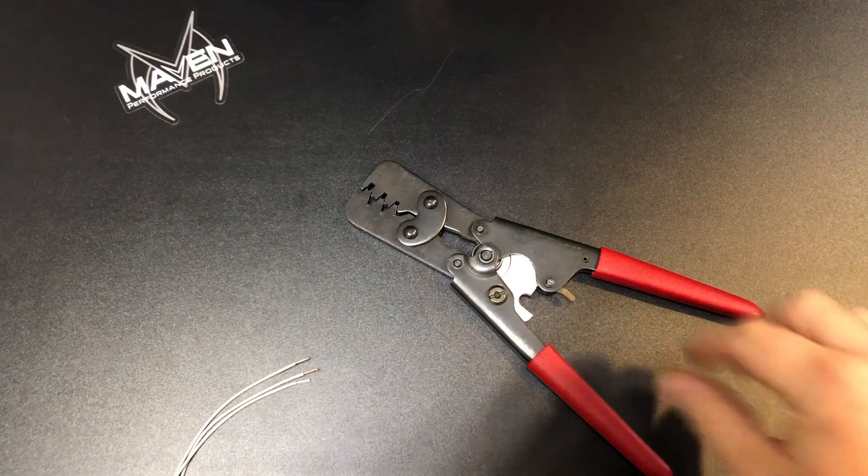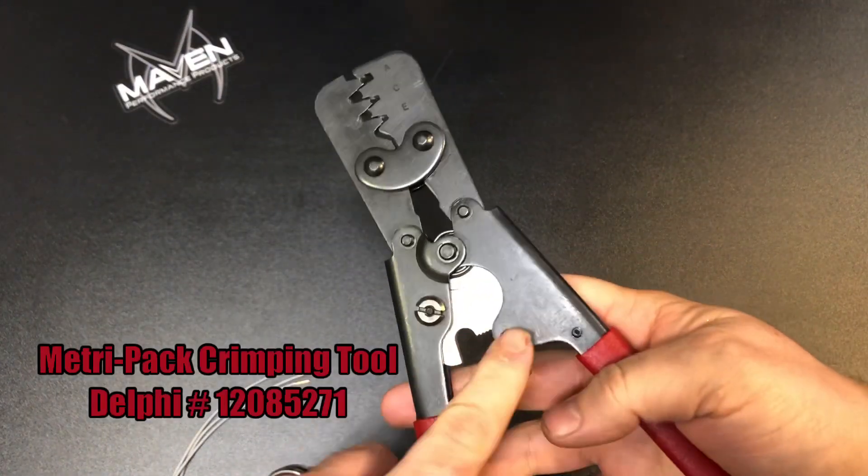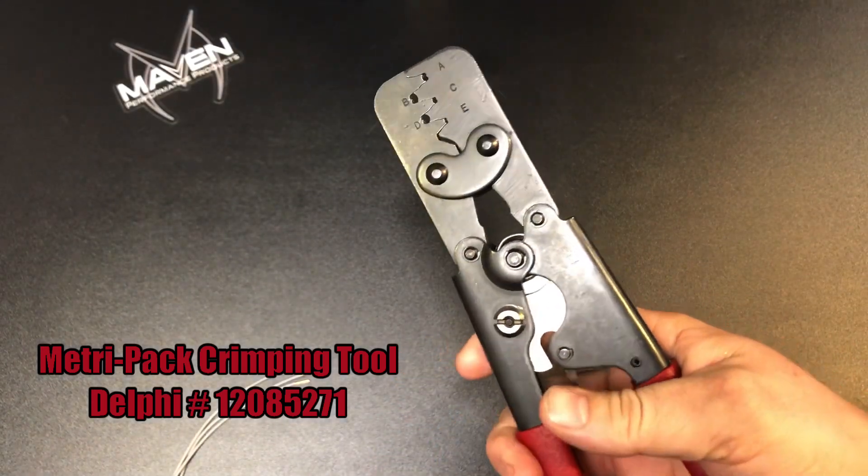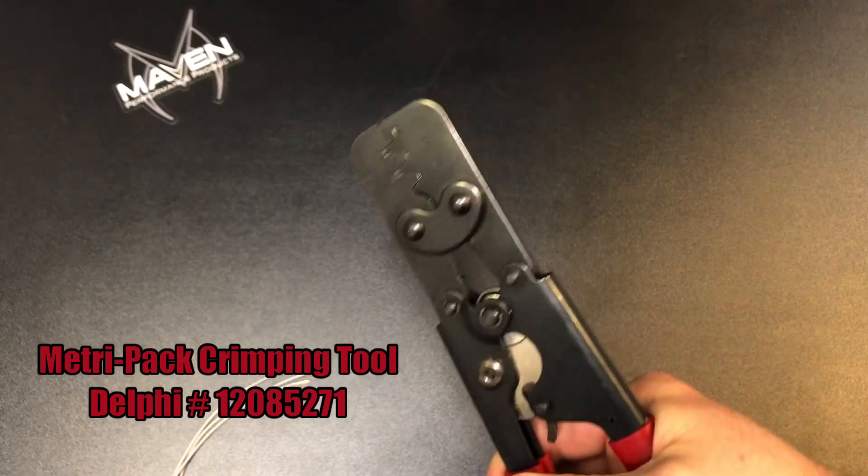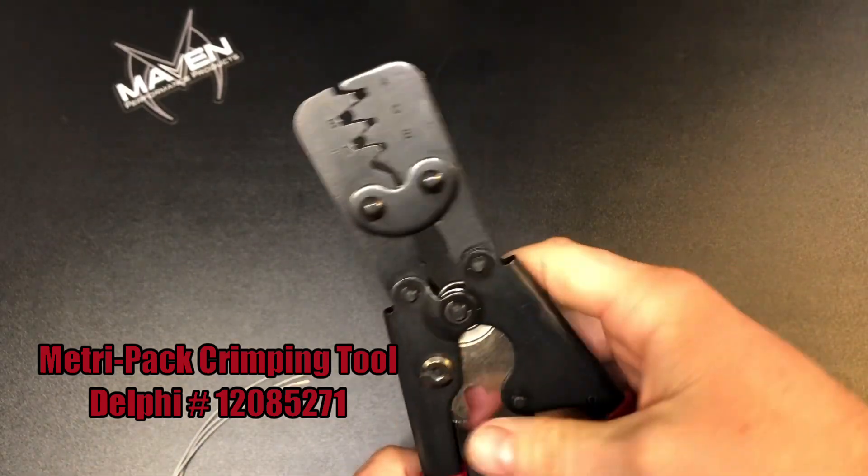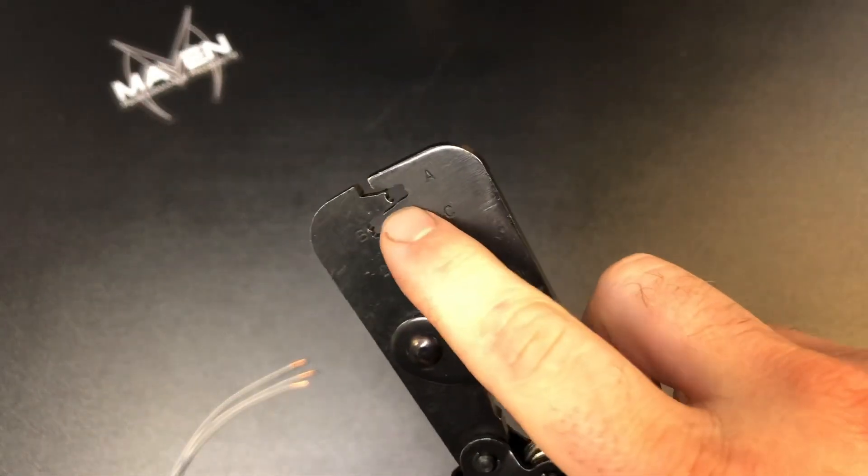Now's a good time to discuss the crimping tool that I use for that. This actually has a Delphi part number. It's a ratcheting setup here. It basically makes it so you only need like four hands instead of five hands to get the job done. It can be a little tedious to get all the wires into the splice correctly.